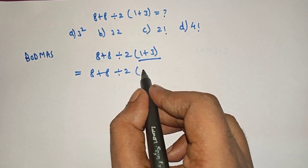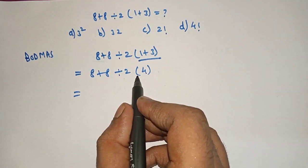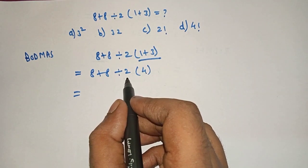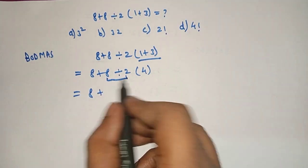Therefore, 8 plus 8 divided by 2 into 1 plus 3 is what? 4. Now here we will solve this term first.